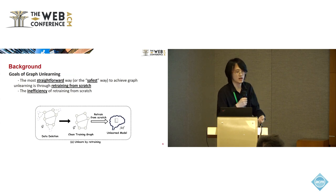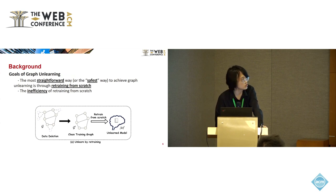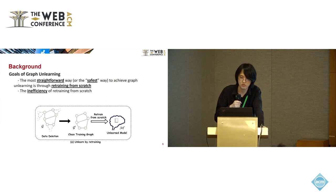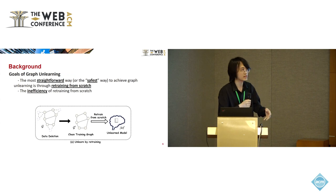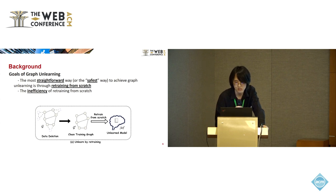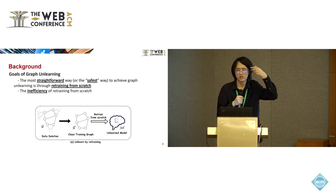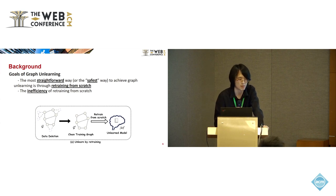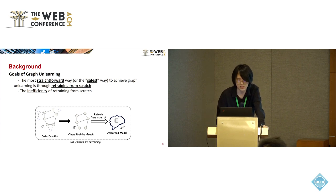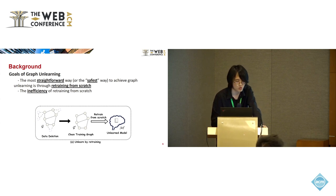The most straightforward way to achieve graph unlearning is to directly remove the undesirable data points from the training graph, retrain all the model from scratch, and then get an unlearned model without the impact of those undesirable data points. However, retraining-based methods may have inefficiency problems. In some large-scale datasets with billions of nodes and edges, and also with complex graph machine learning models, retraining from scratch may be infeasible in these difficult real-world settings.